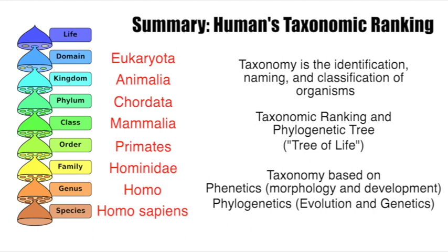To summarize, the full taxonomic ranking for human beings runs from domain down to species. Taxonomy is broken down into phonetics and phylogenetics — we use morphology, development, and genetics to study the evolution of organisms. From this information we build trees of life that connect organisms together, revealing ancestry and helping us understand not only past evolution but how we might evolve in the future. That is the beauty of taxonomy.